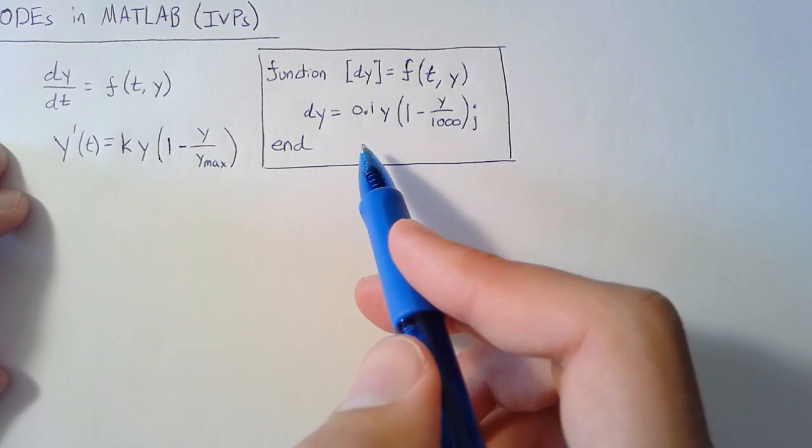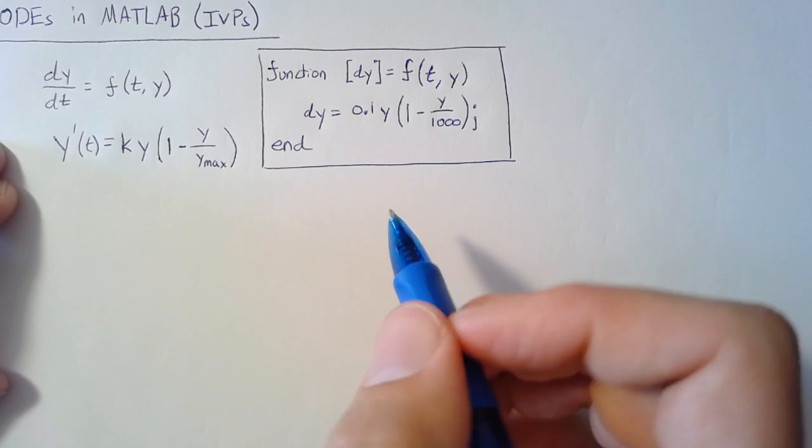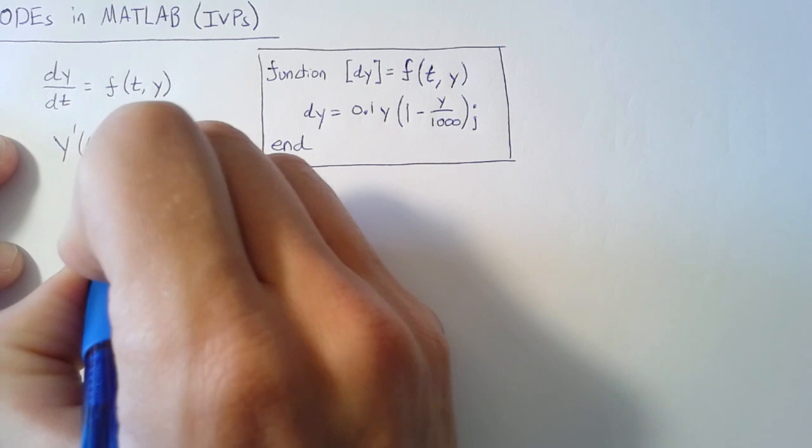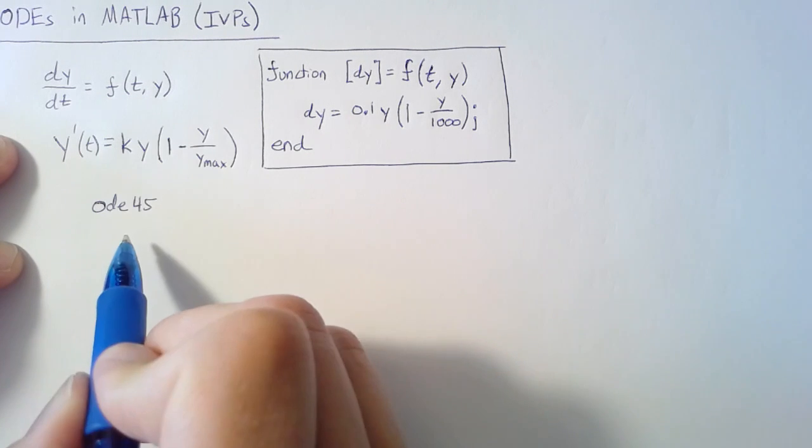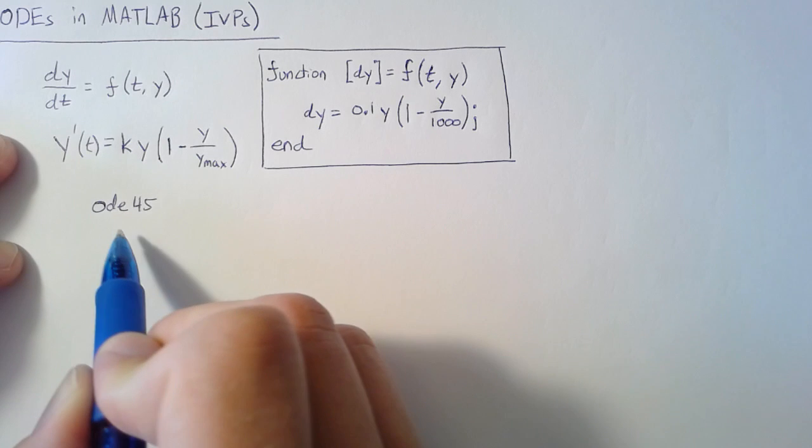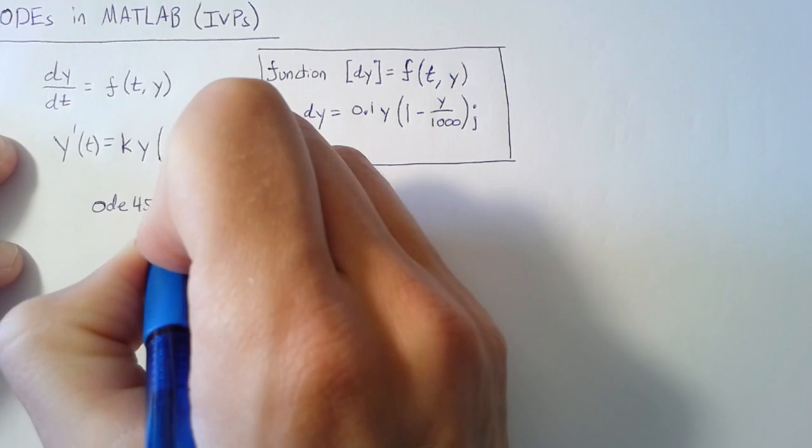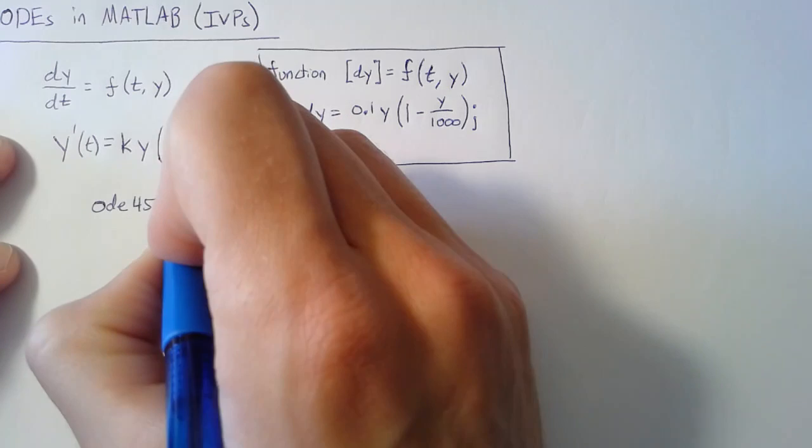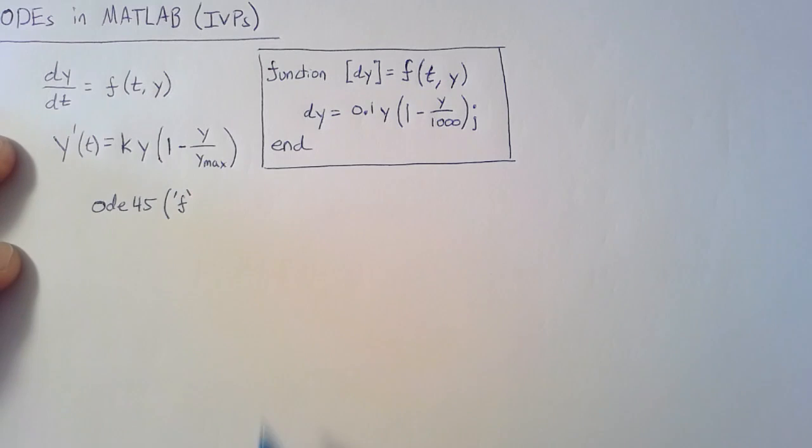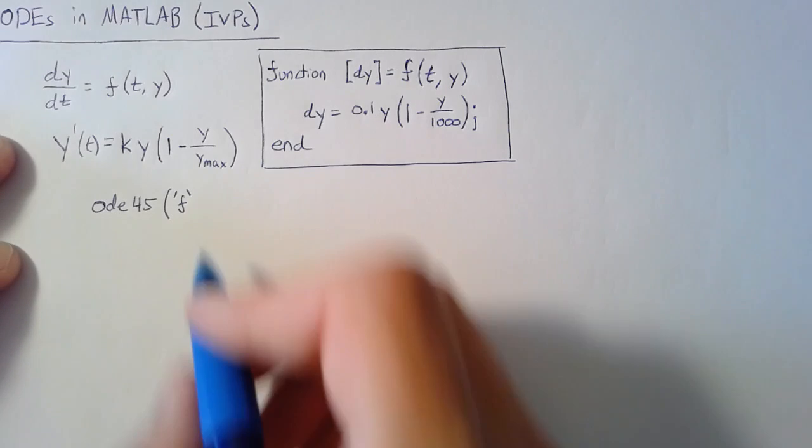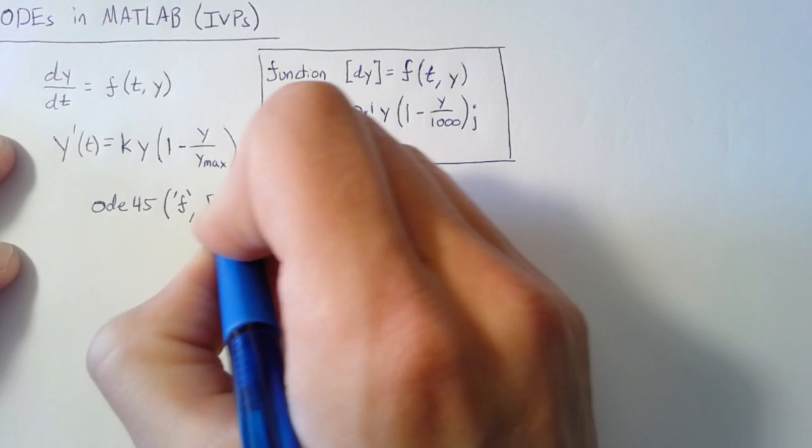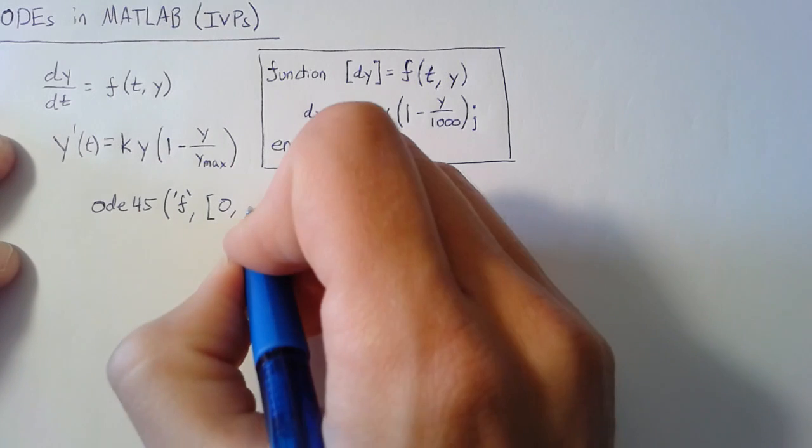Once we have this, we want to plug it into the ODE solver. The way that we call the ODE solver is just ODE45. There are actually a number of different types, but we'll use ODE45 - it's the most common and one of the fastest. The first argument is the function name, which is f. The next is the range of time over which we want MATLAB to integrate. We'll start at 0 and go to 200.